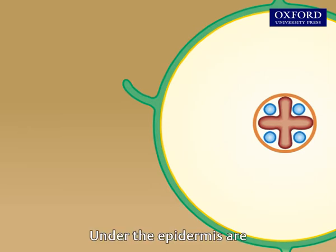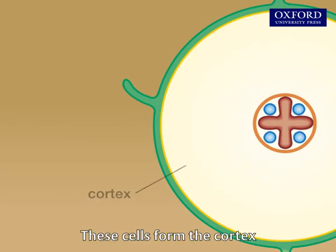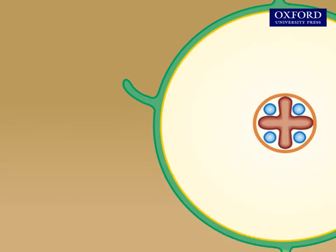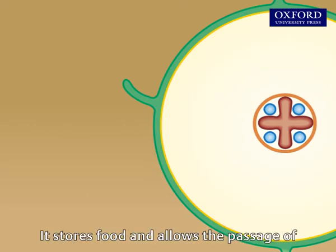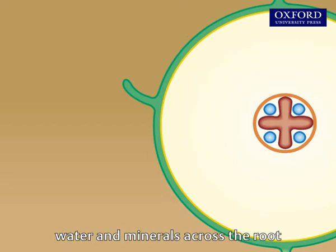Under the epidermis are several layers of thin-walled cells. These cells form the cortex. It stores food and allows the passage of water and minerals across the root.